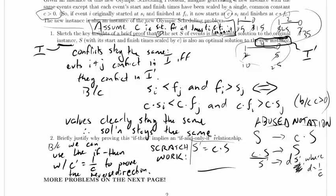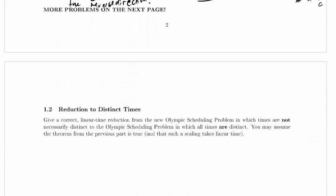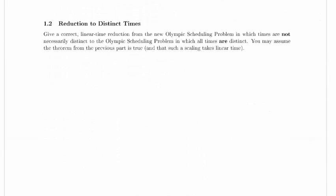We've learned that we can scale the times while not affecting the solution set on one of these new Olympic scheduling problems, so let's go down to the next part. Reduction to distinct times. Give a correct linear time reduction from the new Olympic scheduling problem in which times are not necessarily distinct to the Olympic scheduling problem in which all times are distinct.